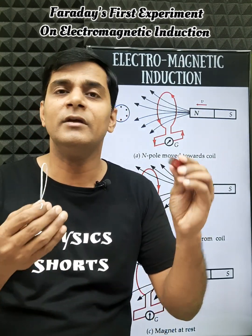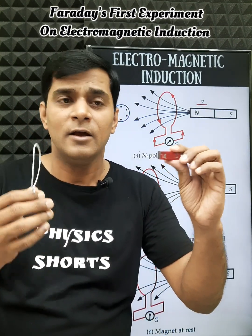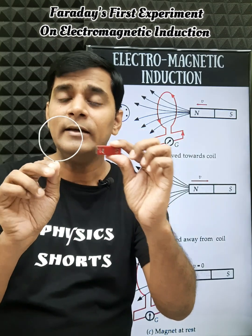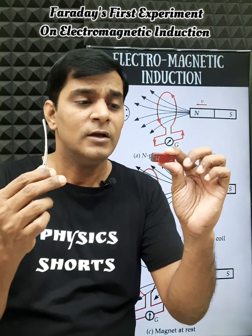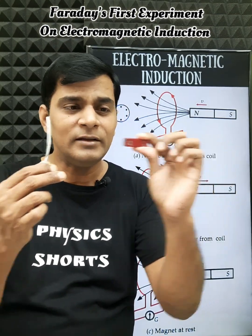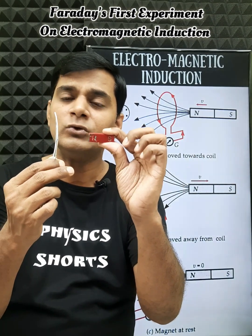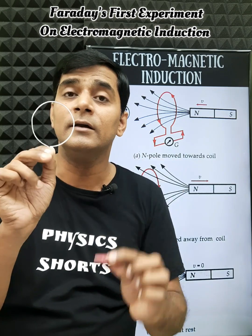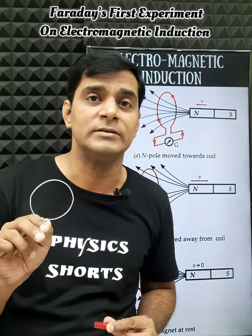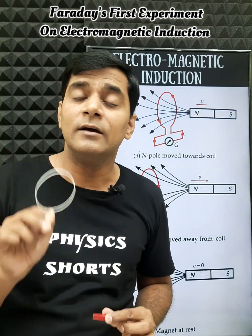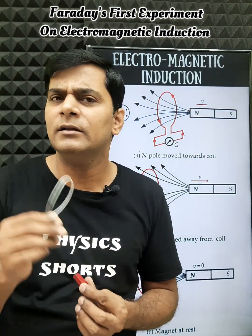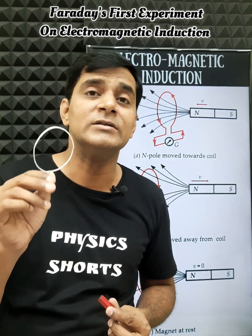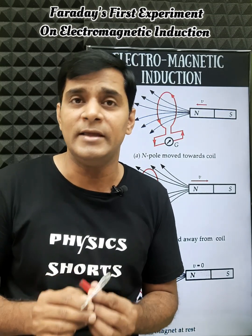He observed that whenever we bring a magnet close to a closed conducting loop, a current is induced in the loop. This current is called the induced current, and the emf generated is called the induced emf.